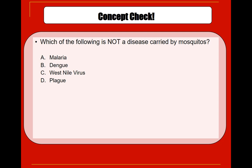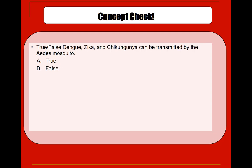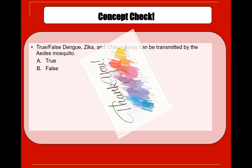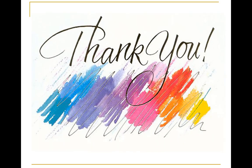Let's do a quick concept check. Which of the following is not a disease carried by mosquito? Plague is not — malaria, dengue, and West Nile virus are all mosquito-carried diseases. True or false: dengue, Zika, and chikungunya can be transmitted by the Aedes mosquito. True.